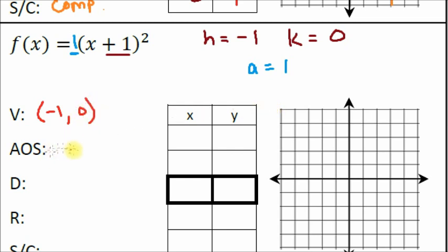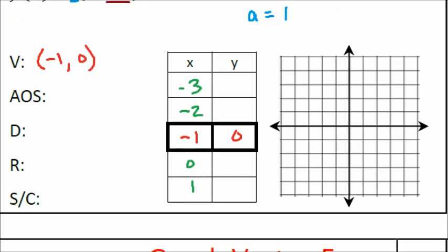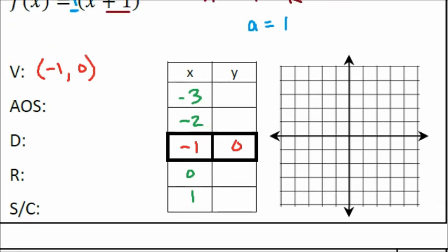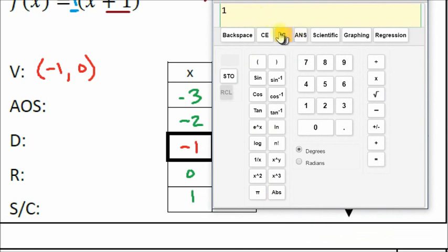We'll figure out the axis of symmetry in a moment. First, let's fill out our table. The vertex is (−1, 0), and we'll go two numbers below and two numbers above. Let's plug in x = −3 in the calculator.